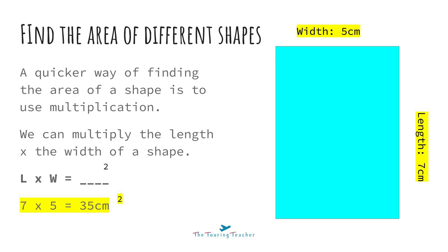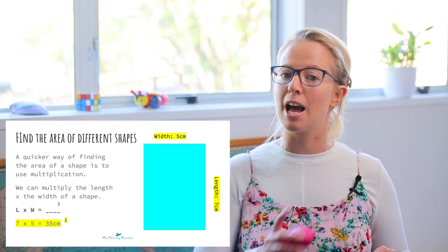That is one way of finding out the area, but there is a quicker way, and this is when we're going to be using our multiplication skills. If you need a bit of practice, you can pause the video here and do a little bit of your basic facts times tables practice. Otherwise, let's get rolling. So a quicker way of finding the area of a shape is to use multiplication — we can multiply the length times the width of a shape. The rule is simply length times width.